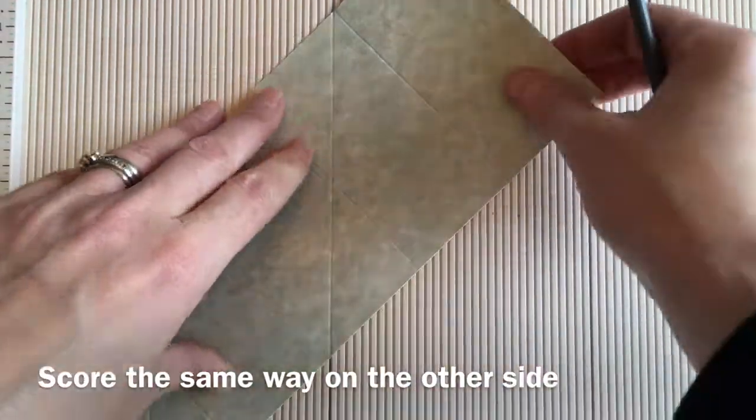Then I'm just folding my score lines closest to the edge, folding them in. I flip that panel over and then I fold the next score line.